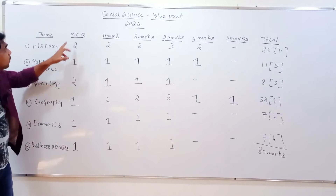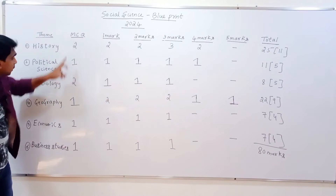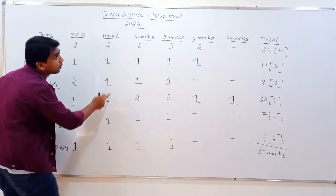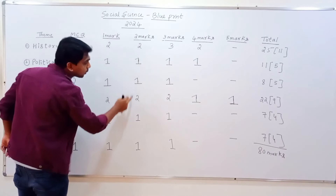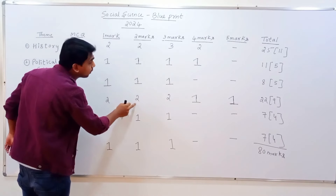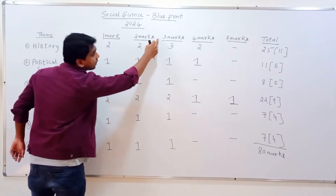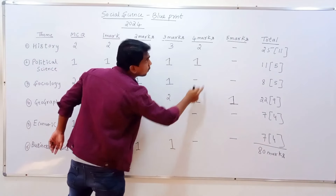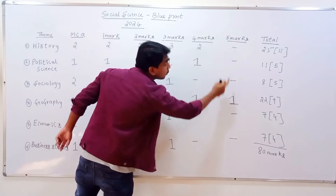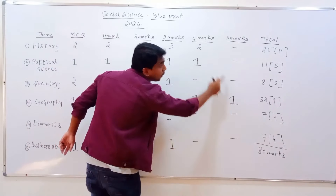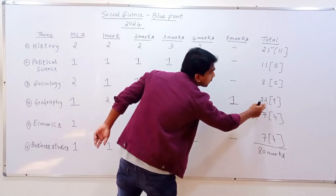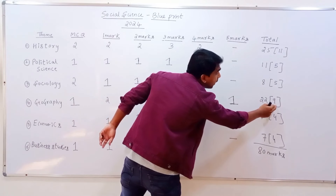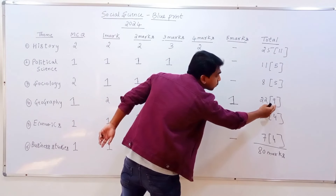Geography: multiple choice — one mark is one question, two mark is one question, three mark is one question, four mark is one question, five mark is one question. Total is 22 marks. Yes questions is 9. So Geography has 9 questions for a total of 22 marks.